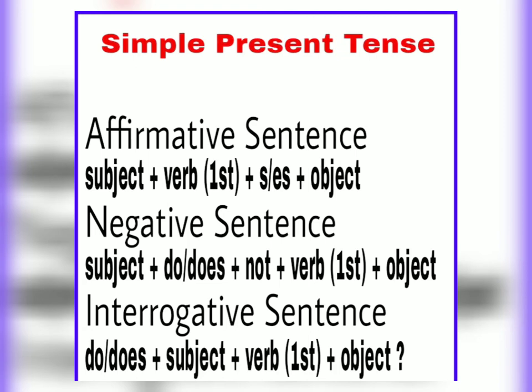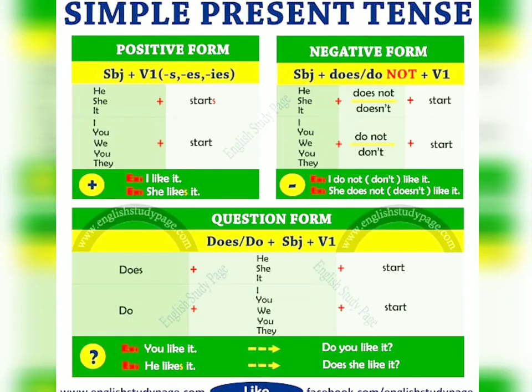The third type is the interrogative sentence, where you ask questions. The structure is: Helping verb (do/does) + Subject + first form of verb + Object + question mark. The helping verb do or does comes first depending on the subject, then you write the subject, then the first form of the verb, then the object, and at the end you put a question mark.